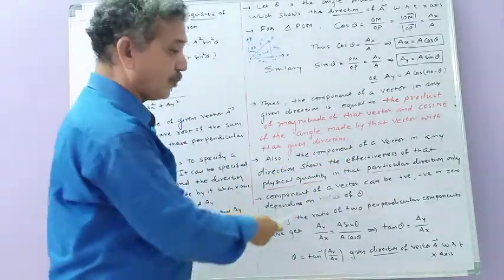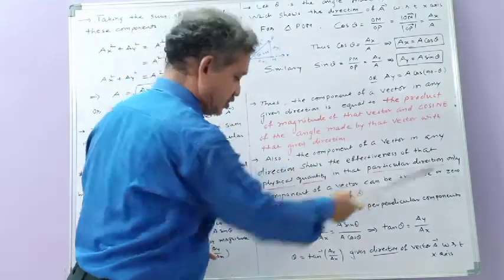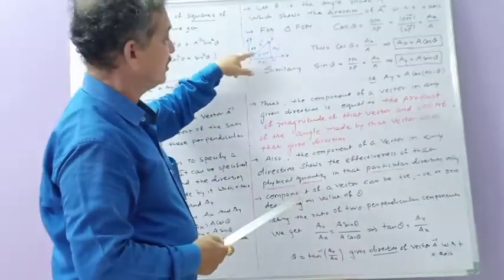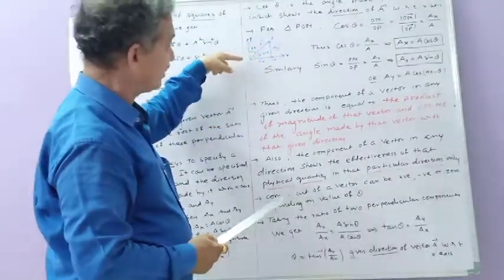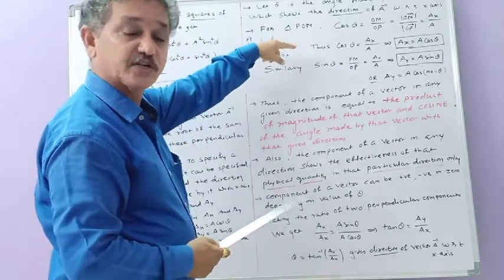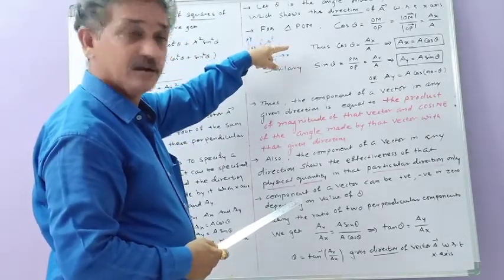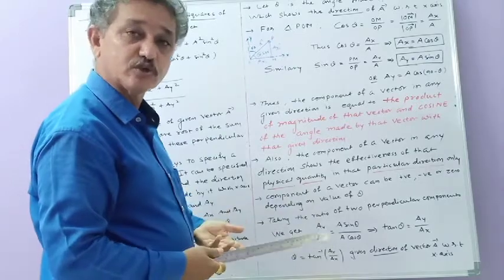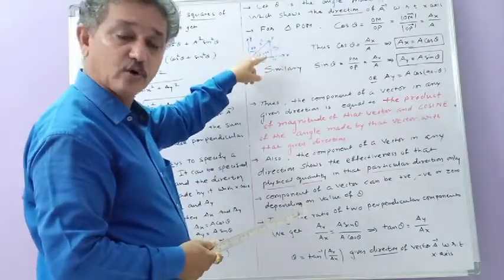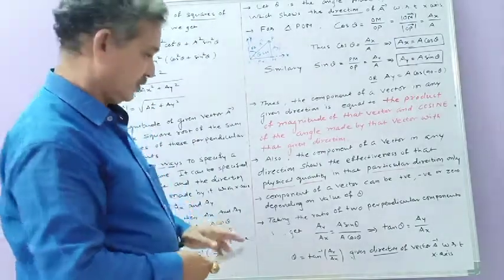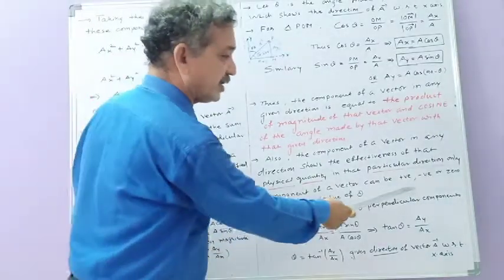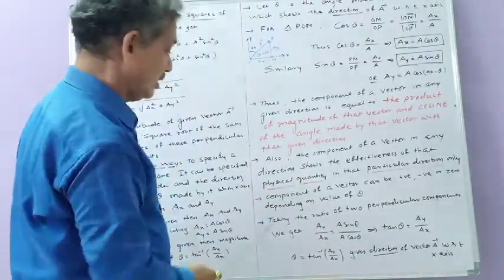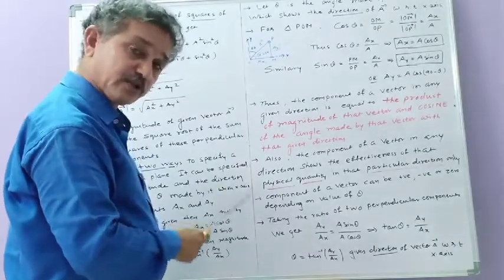One more thing: components of a vector can be positive, negative, or zero, depending on the value of θ. I will explain this in detail after this topic.